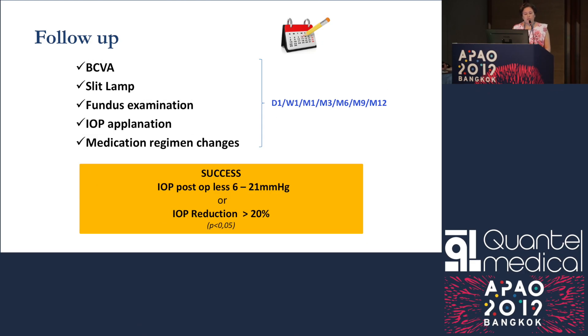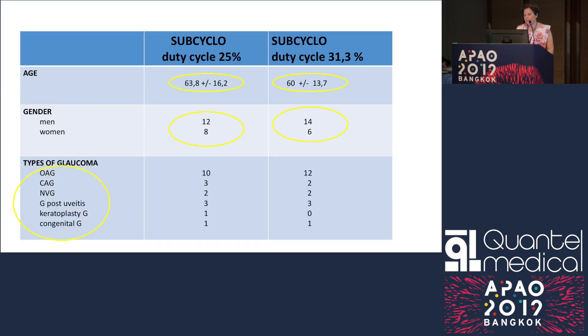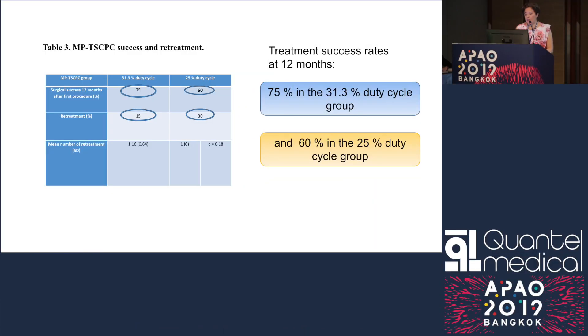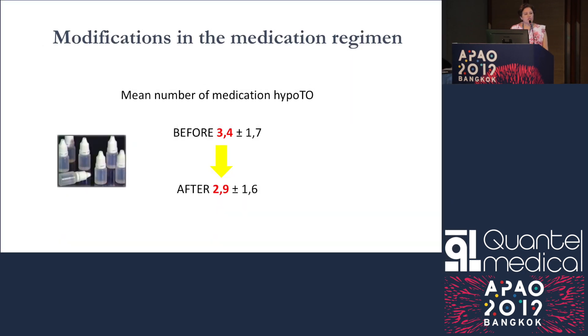Success was defined as an IOP reduction of at least 20%. In both groups, the study showed a statistically significant IOP reduction, occurring at day 1 and day 7, followed by stabilization. The success rate was higher in the second group treated with the 31.3% duty cycle compared to the first. The mean number of medications was reduced from 3.4 to 2.9.